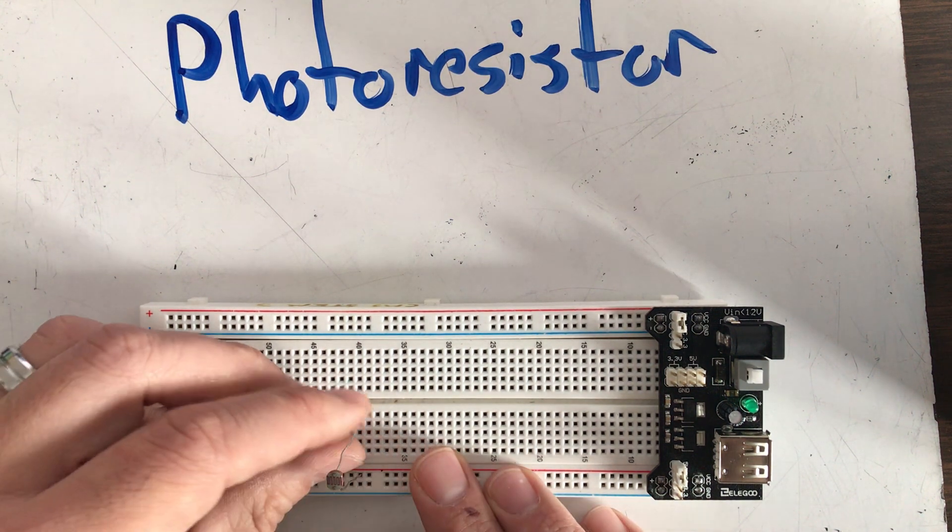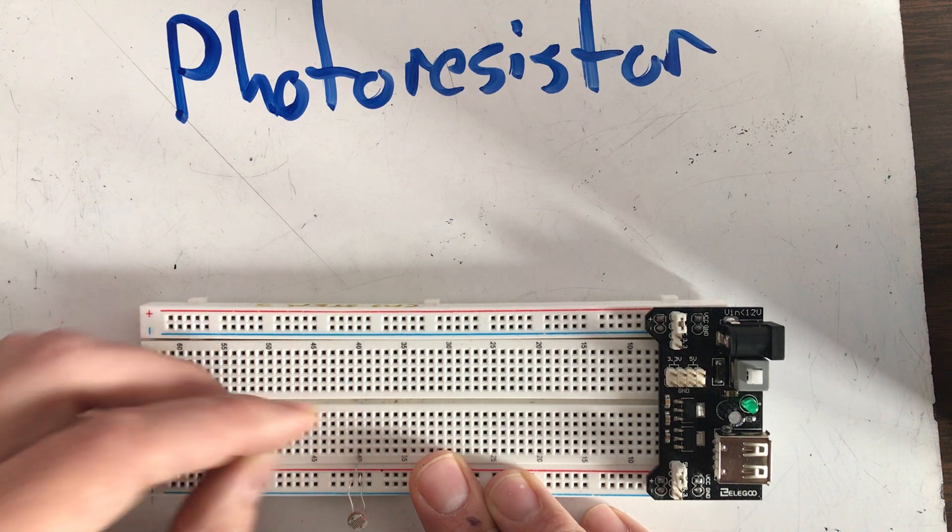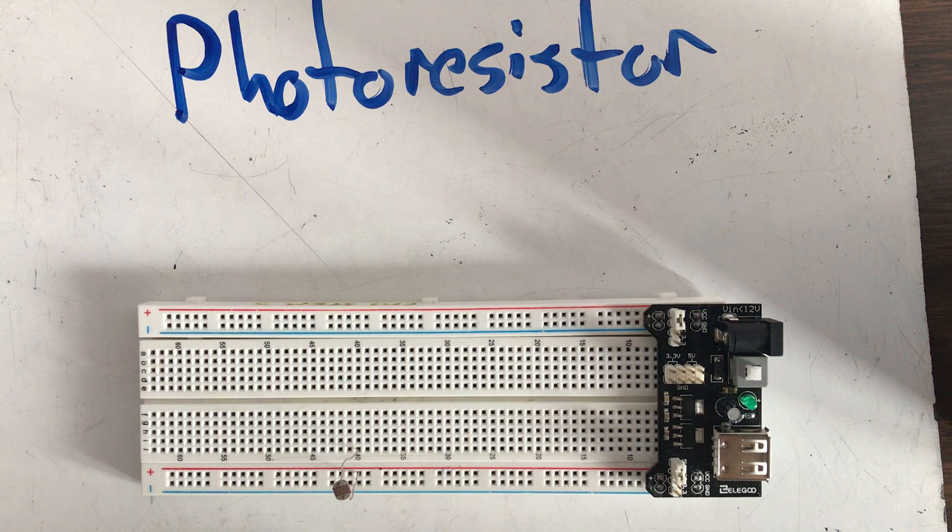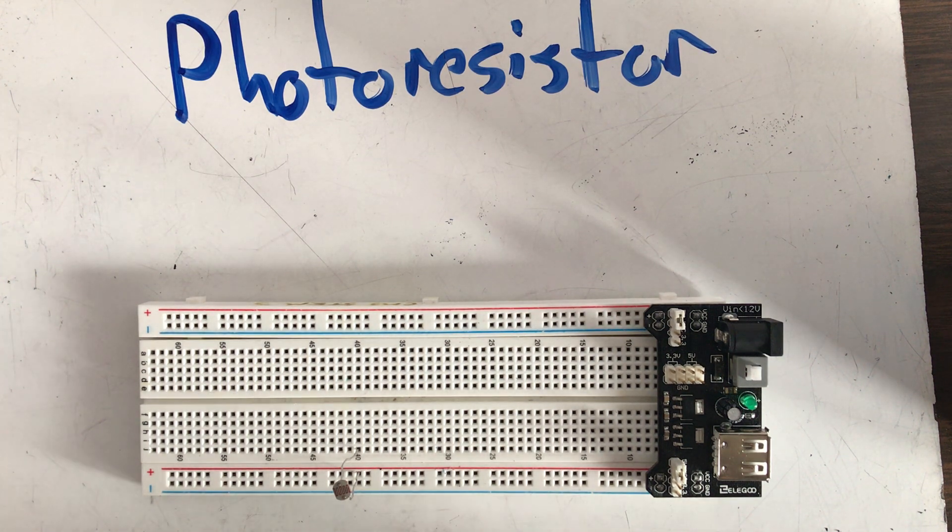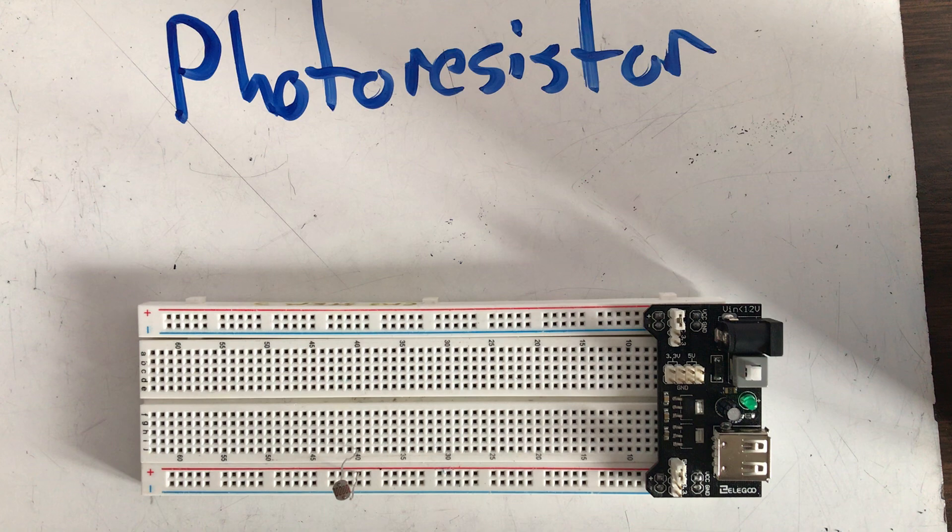Let me scoot that back a couple holes there. So row 40 is going to get its current from the photoresistor. That current is going to have a strong voltage as long as it's bright in the room. But the darker it gets, the lower that voltage gets. Because remember, this thing is going to increase its resistance in the dark and decrease its resistance in the light. That means in the darkness, with increased resistance, it lets less current through. And in the brightness, with decreased resistance, it lets more current through.